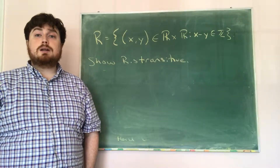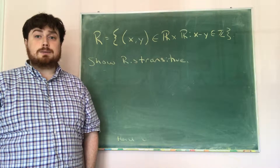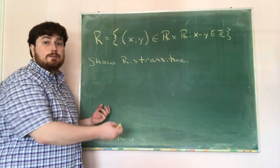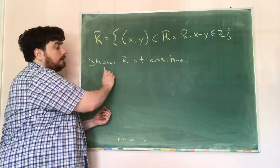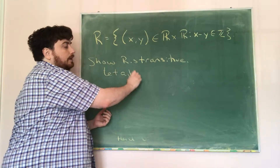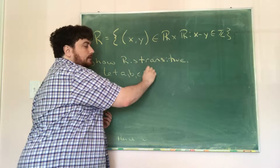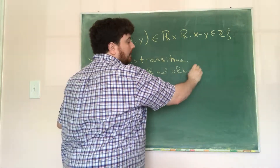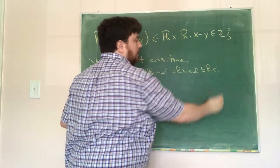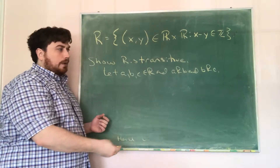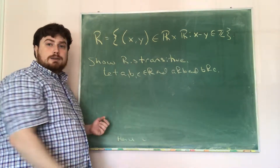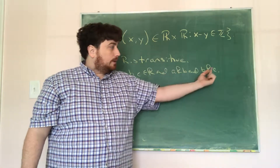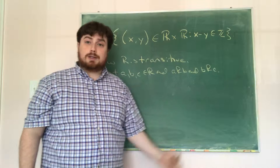Now that we have that r is both reflexive and symmetric, we need to show it is transitive. Transitivity means: suppose a, b, and c are real numbers, and a r b and b r c. We then have to show that a is related to c. That is, from a r b and b r c, we can go directly from a to c.